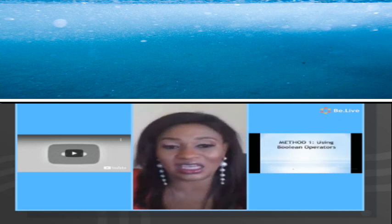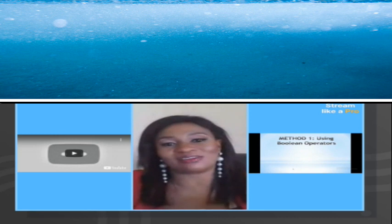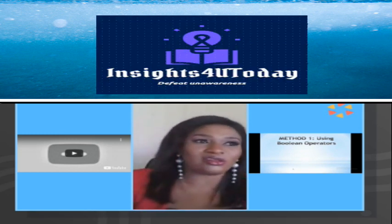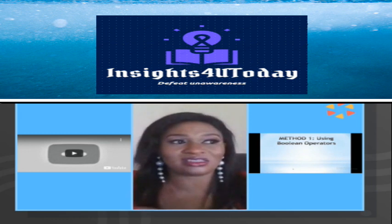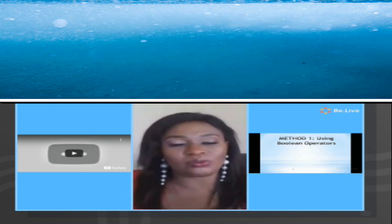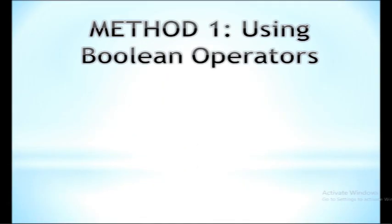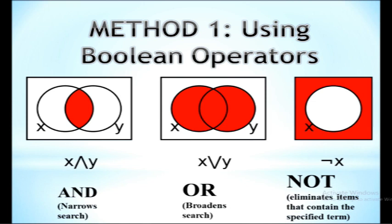Let's go to the first method: using Boolean operators. I've previously done a video on operators — you can check it in my channel on YouTube. Boolean operators involve three words: AND, OR, and NOT — or even AND NOT. These operators must be written in capital letters. AND narrows your search — when you enter your keywords using AND in between them, it will narrow your search results for you.